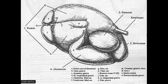Rumen is divided into different sacs: dorsal sac, ventral sac, caudodorsal blind sac, caudoventral blind sac, etc. The groove dividing the rumen into two major sacs — dorsal and ventral — is called the longitudinal groove, present on both the lateral surface and visceral surface of the rumen. The longitudinal groove on the lateral surface is called the left longitudinal groove, and on the visceral surface it is called the right longitudinal groove.